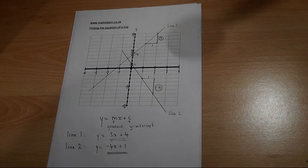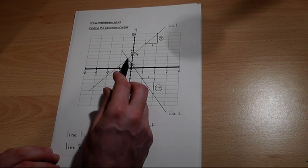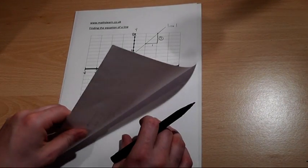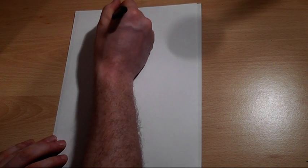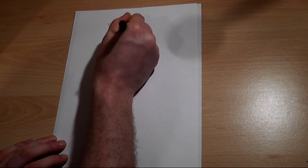We've therefore managed to find the equation of those two lines. I now want to discuss one extension idea for those who wish to push to the higher grades. We can find where these two lines actually meet. Now we know the equations were y equals three x plus four, and y equals minus four x plus one. But to find where these two lines intersect requires simultaneous equations.